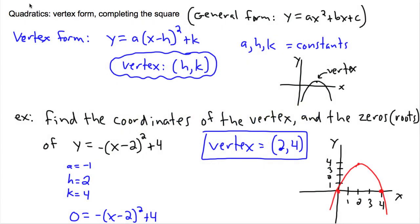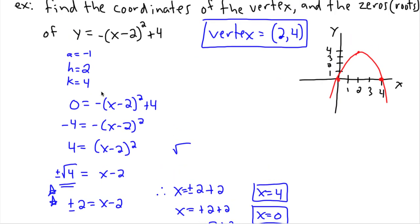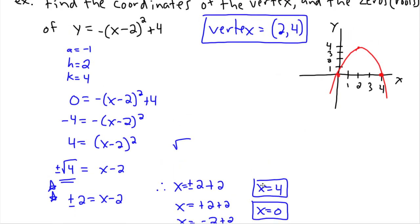In the previous video we were looking at how to use vertex form in order to help us solve quadratics. Here we had looked at an example of something that was already given in vertex form, and then we were able to actually go through and solve and figure out where the vertex was and also where the x-intercepts were, which means we could actually graph it.